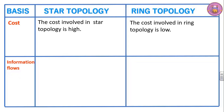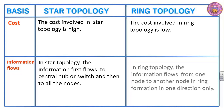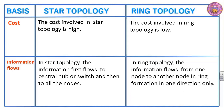Information flow. In star topology the information first flows to the central hub or switch and then to all the nodes. In ring topology the information flows from one node to another in ring formation, and that too in one direction only.